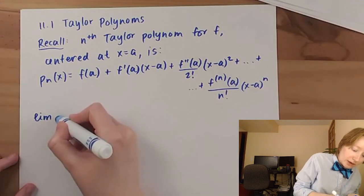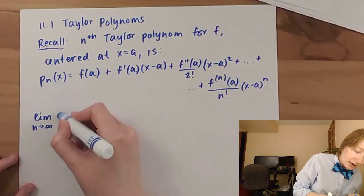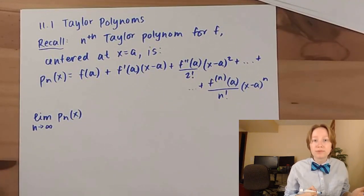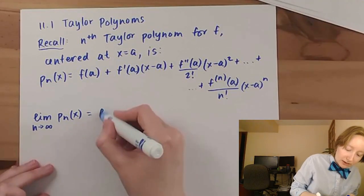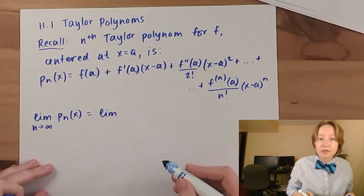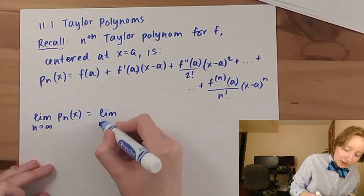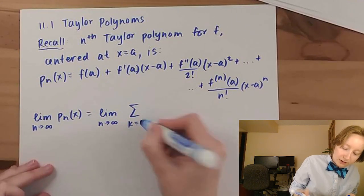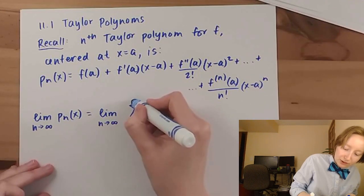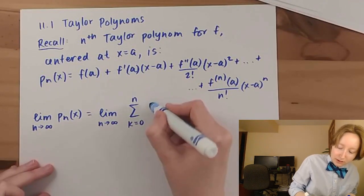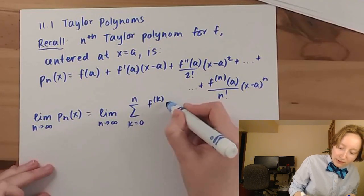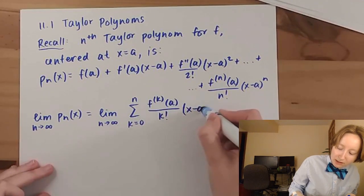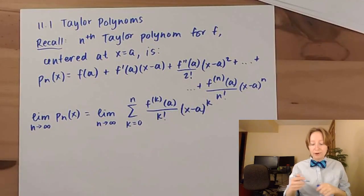What I could do is take the limit as n approaches infinity of this polynomial, and we're going to get a sum of infinite terms. So I'm taking the limit of the partial sum of Taylor polynomials as n approaches infinity, where k goes from 0 to n of the k-th derivative of f evaluated at a, over k factorial, times (x−a)^k.